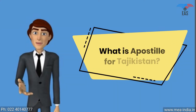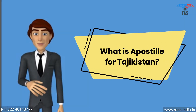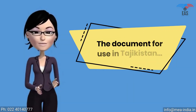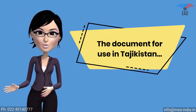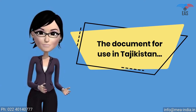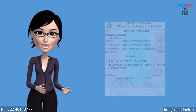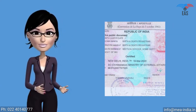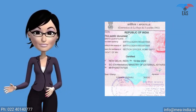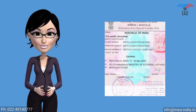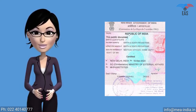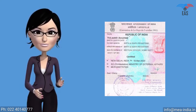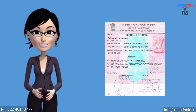What is apostille for Tajikistan? For a document to be used in Tajikistan, the Ministry of External Affairs must legalize it. It is a sticker stamp of square shape, which itself is a printed form consisting of 11 standard fields. It is a unique and special stamp called an apostille.